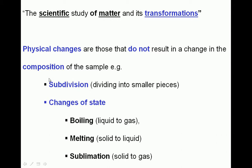Examples of physical changes include subdivision — which is simply dividing the sample into smaller pieces, cutting it up — and changes of state. Examples of changes of state are boiling, melting, and sublimation, which is the change from a solid directly to a gas without going through a liquid phase. An example of a substance that undergoes sublimation is carbon dioxide, which changes from the solid phase directly to the gaseous phase.